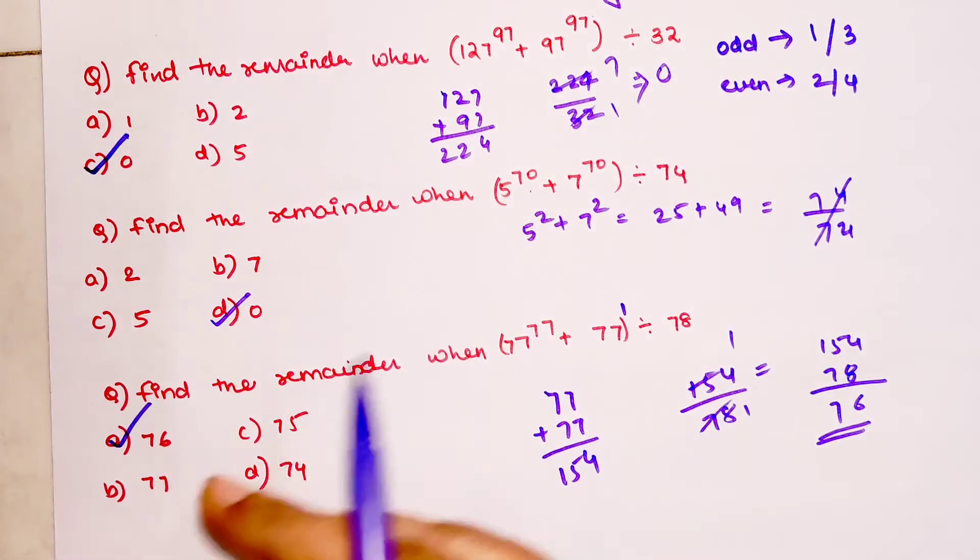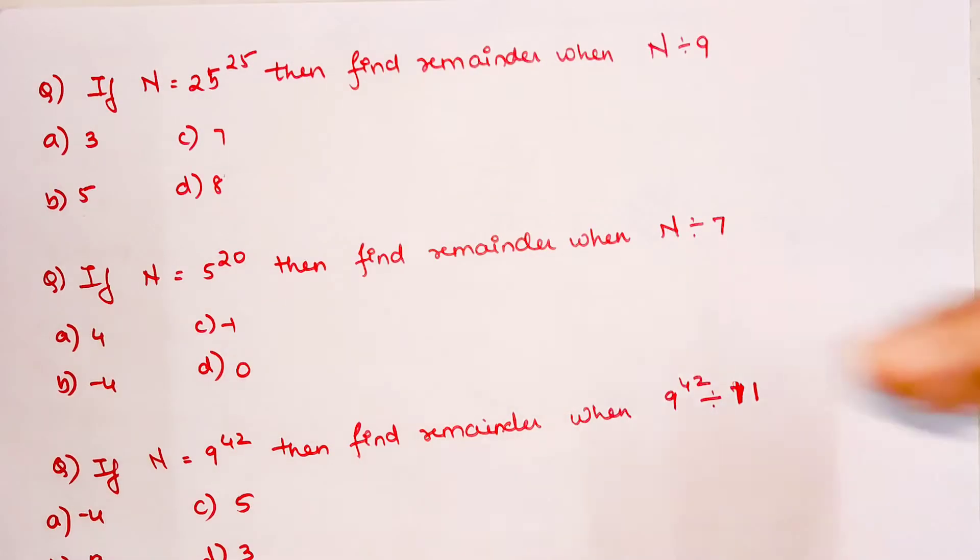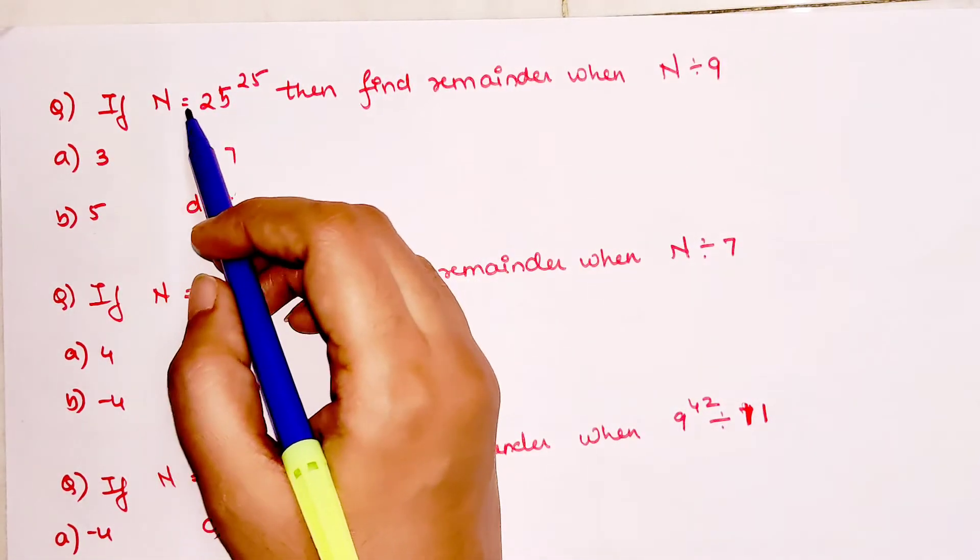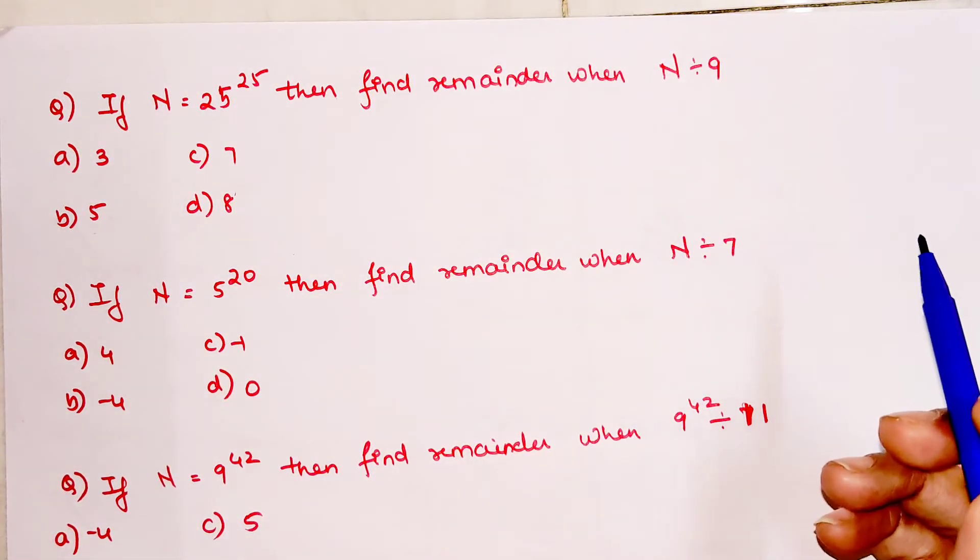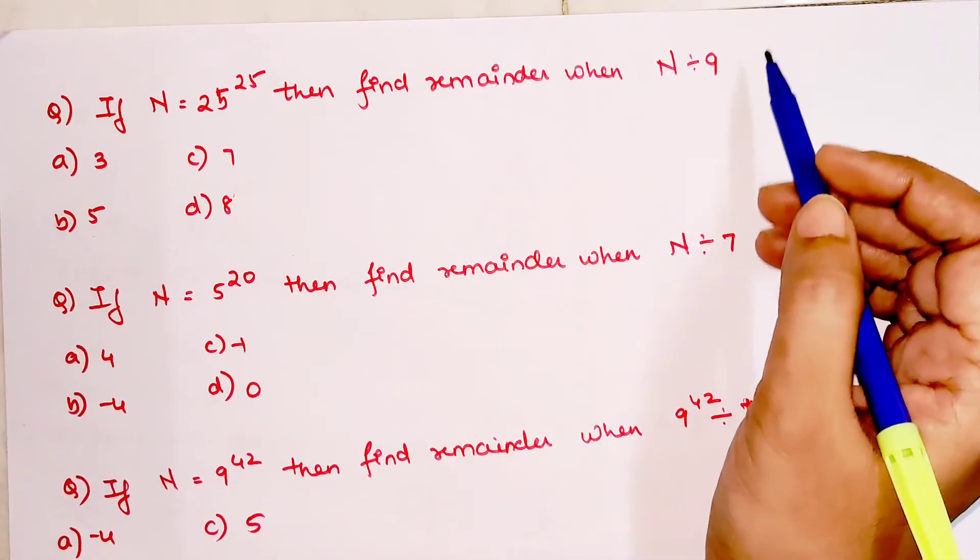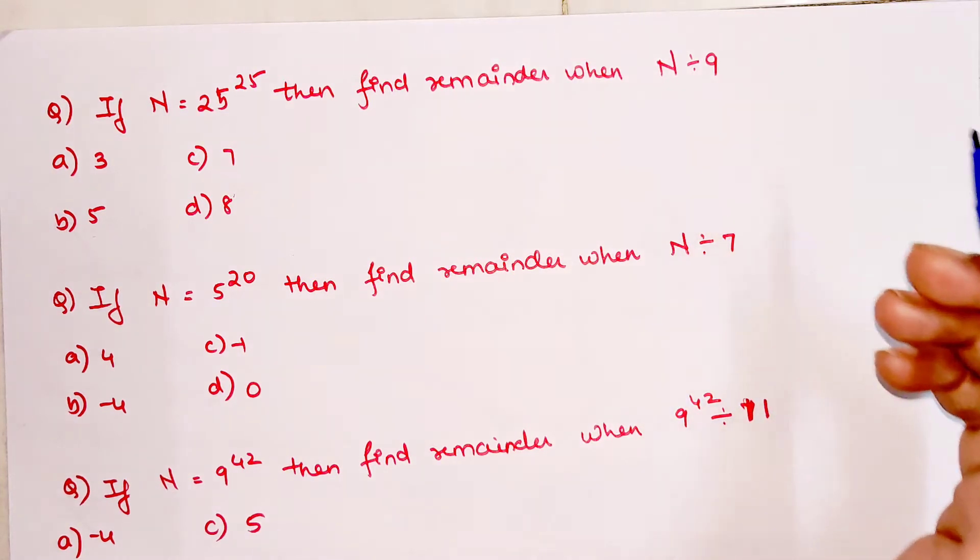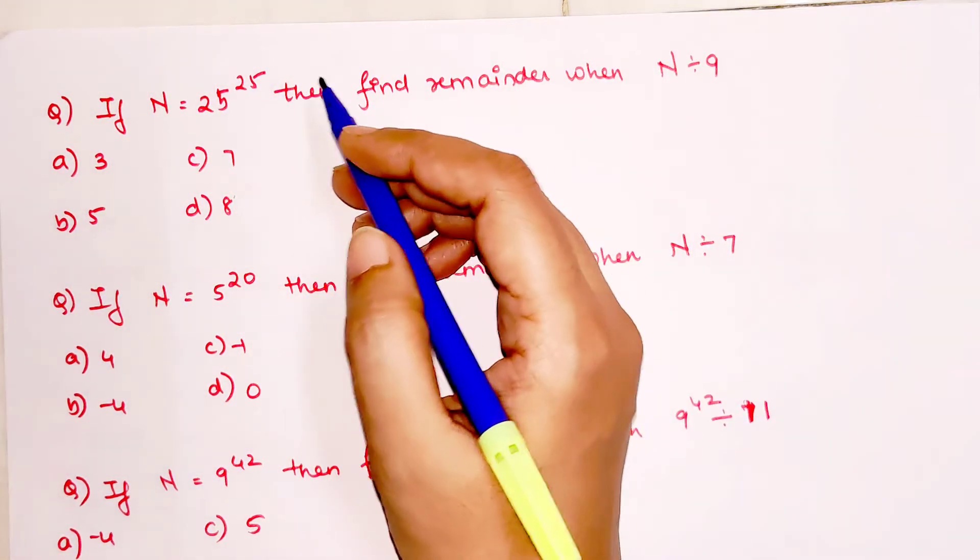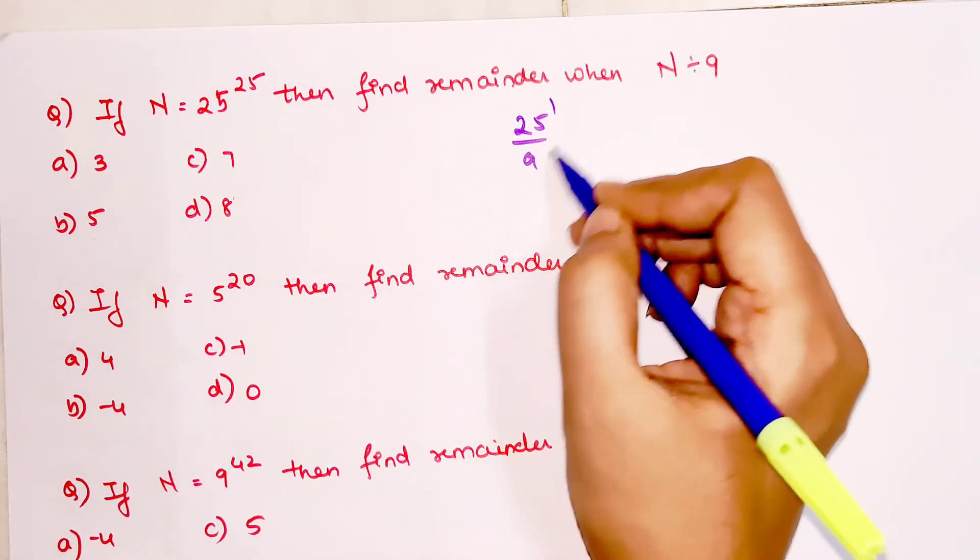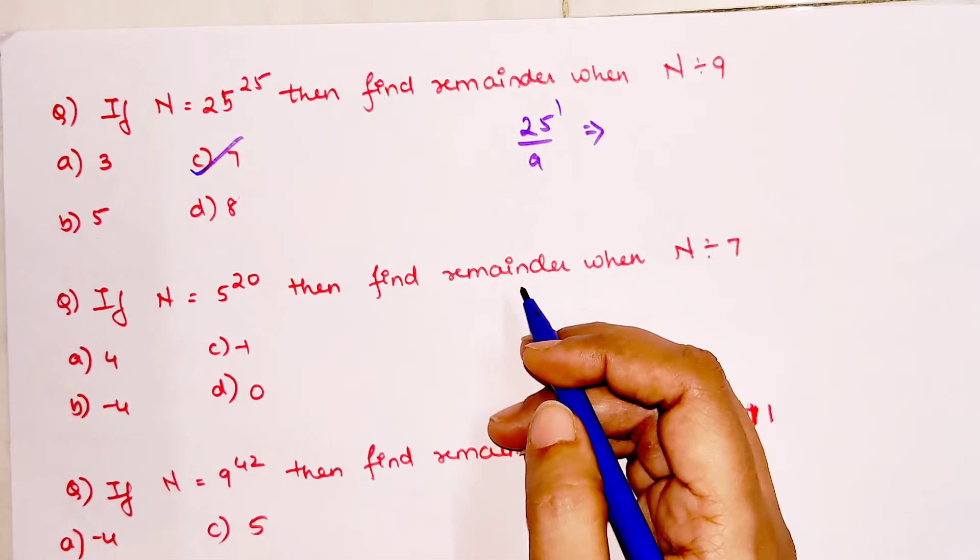Now very quickly, let's look at something different. There are times these kinds of questions have been asked in many of these exams. If N is 25 raised to 25, and you have to tell me what is the remainder when N is divided by 9. In that case, again this is an odd power. So here we will have to do 25 raised to 1 divided by 9. So that gets you what? 2 nines are 18, so 7 is the answer as your remainder.